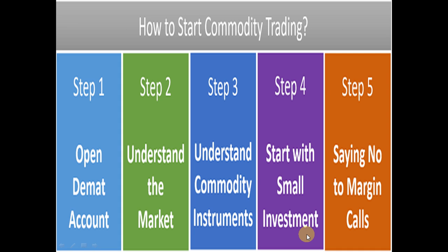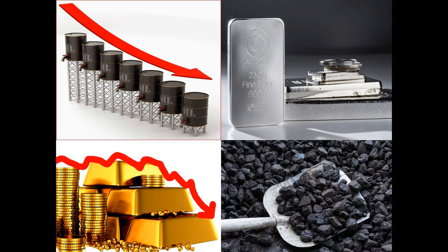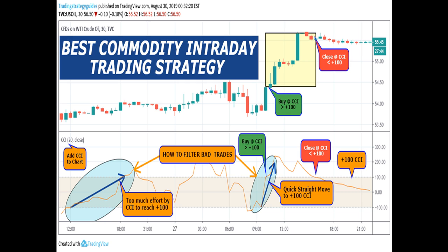Step four: start with a small investment. You have to invest a very small amount — like five percent or two percent of your capital. Step five: say no to margin calls. Avoid all margin calls and don't use any margins for commodity trading. If it is the cash market, do it safely. In India right now, the four most traded commodities are oil, silver, gold, and coal.